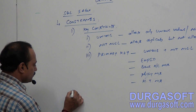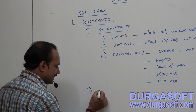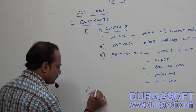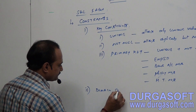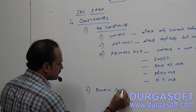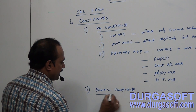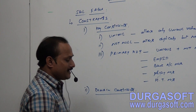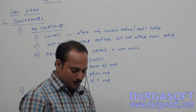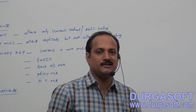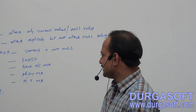Next, what is the second category of constraints? The second category is domain constraints. At some times, the key constraints are unable to control some invalid values inserted into the tables. What is meant by that? Let us see.